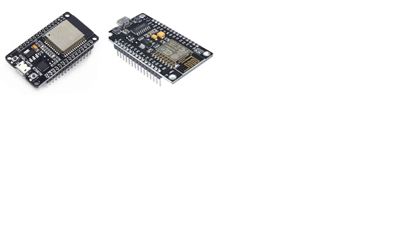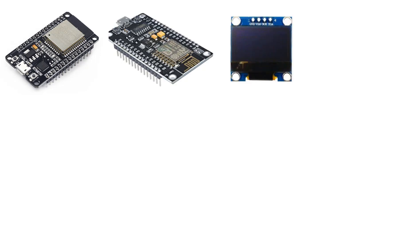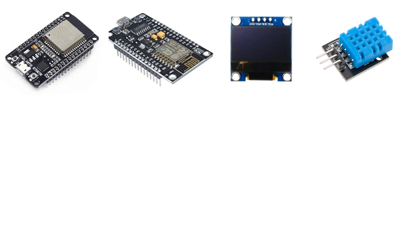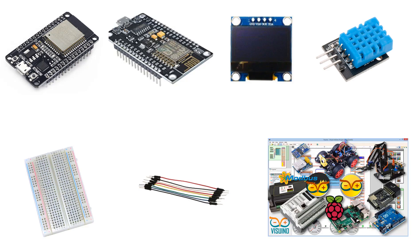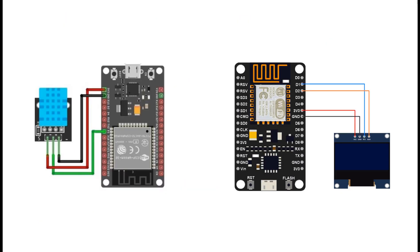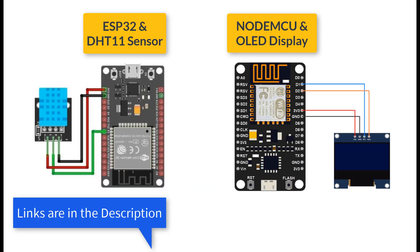For this project, you will need two ESP boards. In our case, it is a NodeMCU board and an ESP32, an OLED display, a DHT11 temperature and humidity sensor, some jumper wires, a breadboard, and the Visuino program. Wire everything according to the schematic.